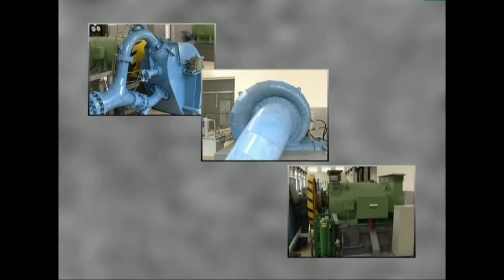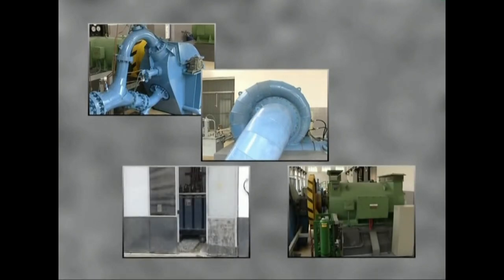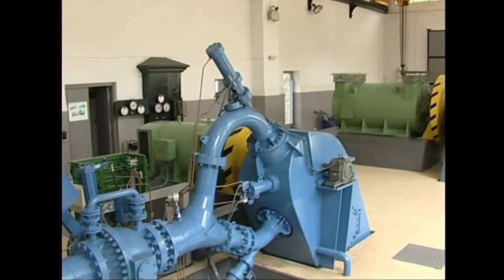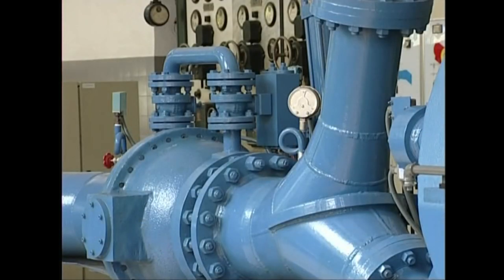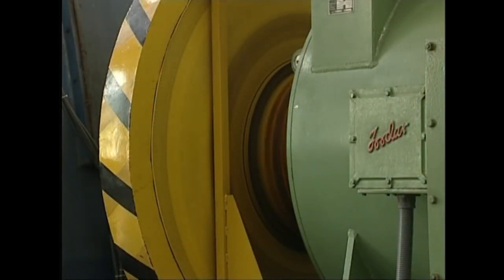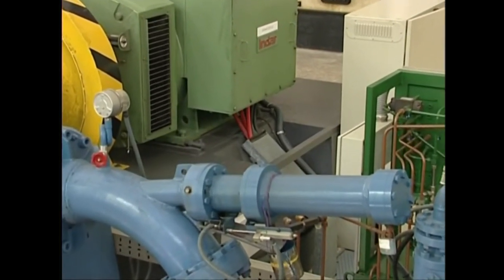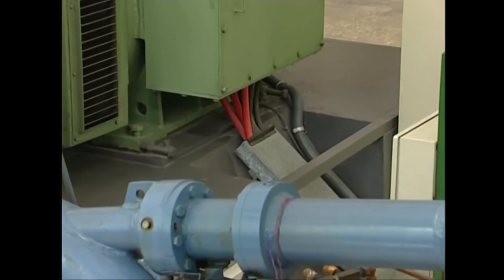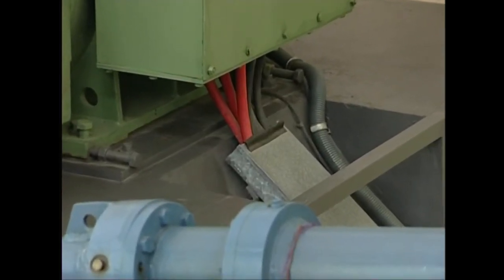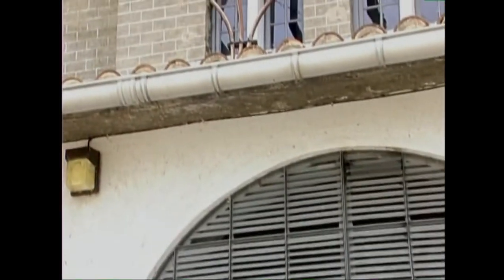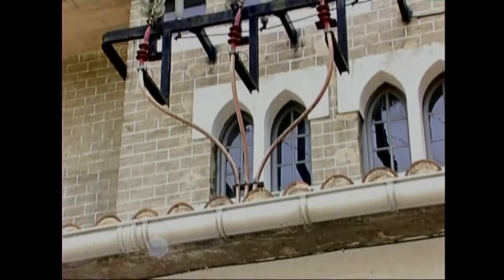Turbina, sorgailua eta transformadorea dira zentralen osagai nagusiak. Turbinak energia hidraulikoa, hau da uraren energia zinetikoa, biratze energia mekaniko bihurtzen du. Biraka jarri den sorgailu elektrikoak energia mekanikoa energia elektriko bihurtzen du. Transformadoreak azkenik sortutako elektrizitatearen tentsioa igotzen du, garraioan energia gutxiago galda dadin.